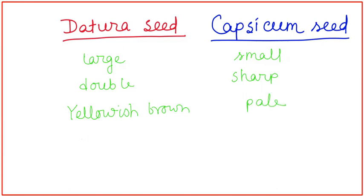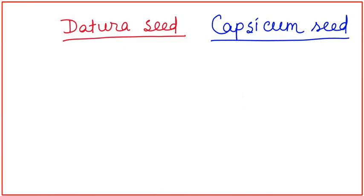Dhatura seeds are odorless but capsicum seeds are pungent. The taste of Dhatura seeds are bitter but capsicum seeds are pungent also. On the surface of Dhatura seeds, there are numerous small depressions.